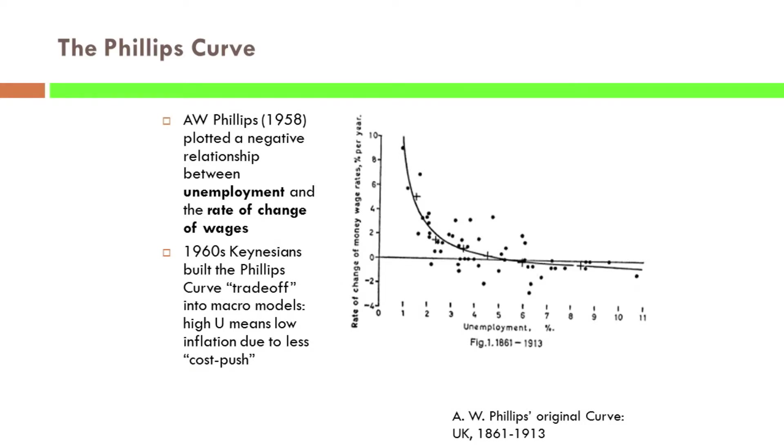Phillips is estimating in a period in which the gold standard prevails, so the average inflation rate is basically zero. It's not too surprising that in years of high unemployment — on the horizontal axis — you get low growth in wages. The relative price of wages is falling or not increasing much because there's slack in the labor market. But when there's tightness in the labor market, the relative price of wages increases.